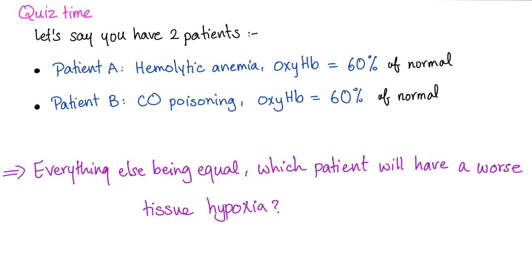Quiz time. You have two patients. Patient A has hemolytic anemia and his oxyhemoglobin is 60% that of a normal person. Patient B has CO poisoning with oxyhemoglobin again of 60% that of normal. Everything else being equal, which patient will have worse tissue hypoxia? Let me know the answer in the comments below. Be safe, stay happy, study hard.